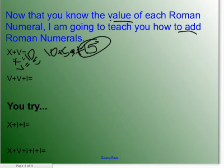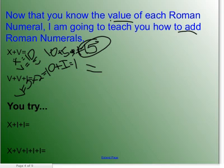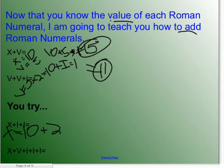V equals 5, times 2 equals 10, plus I equals 1, which equals 11 — and that is 12. Now let's try another: X equals 10, plus 5 times 2 equals 11, and that is your answer.